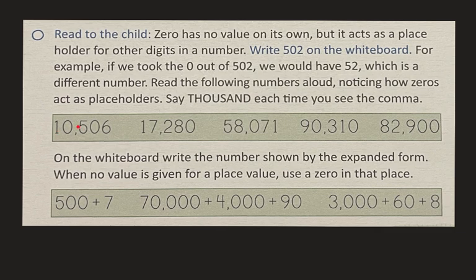Okay, let's look at these numbers. I want you to read the numbers aloud, noticing how zeros act as placeholders. Say thousand each time you see the comma. That's this comma's name, thousand. Okay, so let's try this first one. Ten thousand, five hundred six.